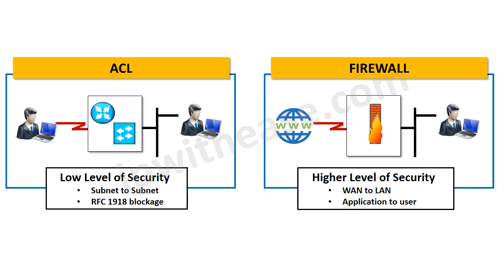Another comparison point is deployment scenario. ACL is deployed in setups where a low level of security is required, like subnet-to-subnet communication control on a layer 3 device, LAN-to-LAN blockage, or RFC 1918 IP blocks. On the other hand, a firewall is provisioned in setups where a higher level of security is required, like WAN-to-LAN security or secured and whitelisted user-to-application traffic control.